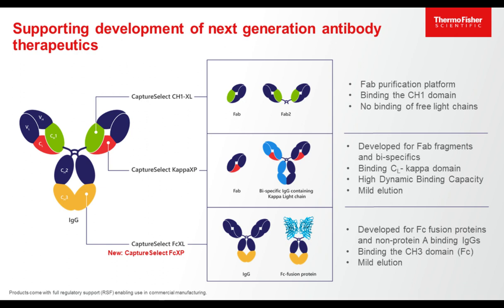The third resin is FCXL, which has been developed specifically for FC fusion proteins or bispecifics where the Protein A binding site is disrupted — which also incorporates mild elution.